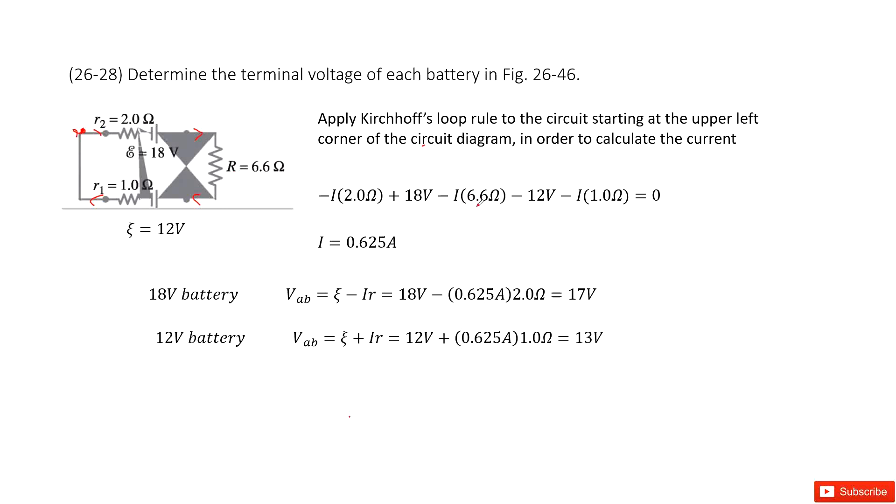This is minus I times 6.6 ohms, and then minus 12 volts because it goes through this way. Minus 12 volts and then minus I times 1 ohm, which equals zero. After this calculation, we can see the current is 0.625 amperes.